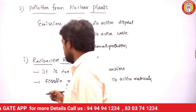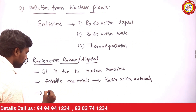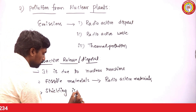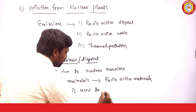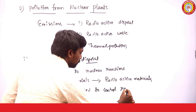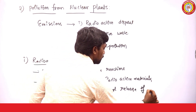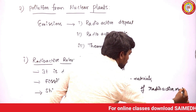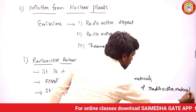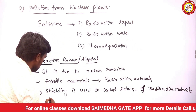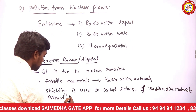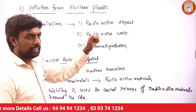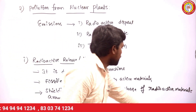We are using one type of material to control radioactive release, known as shielding. Shielding is used to control the release of radioactive materials and waste around the pool. Using shielding, we can control the radioactive release.